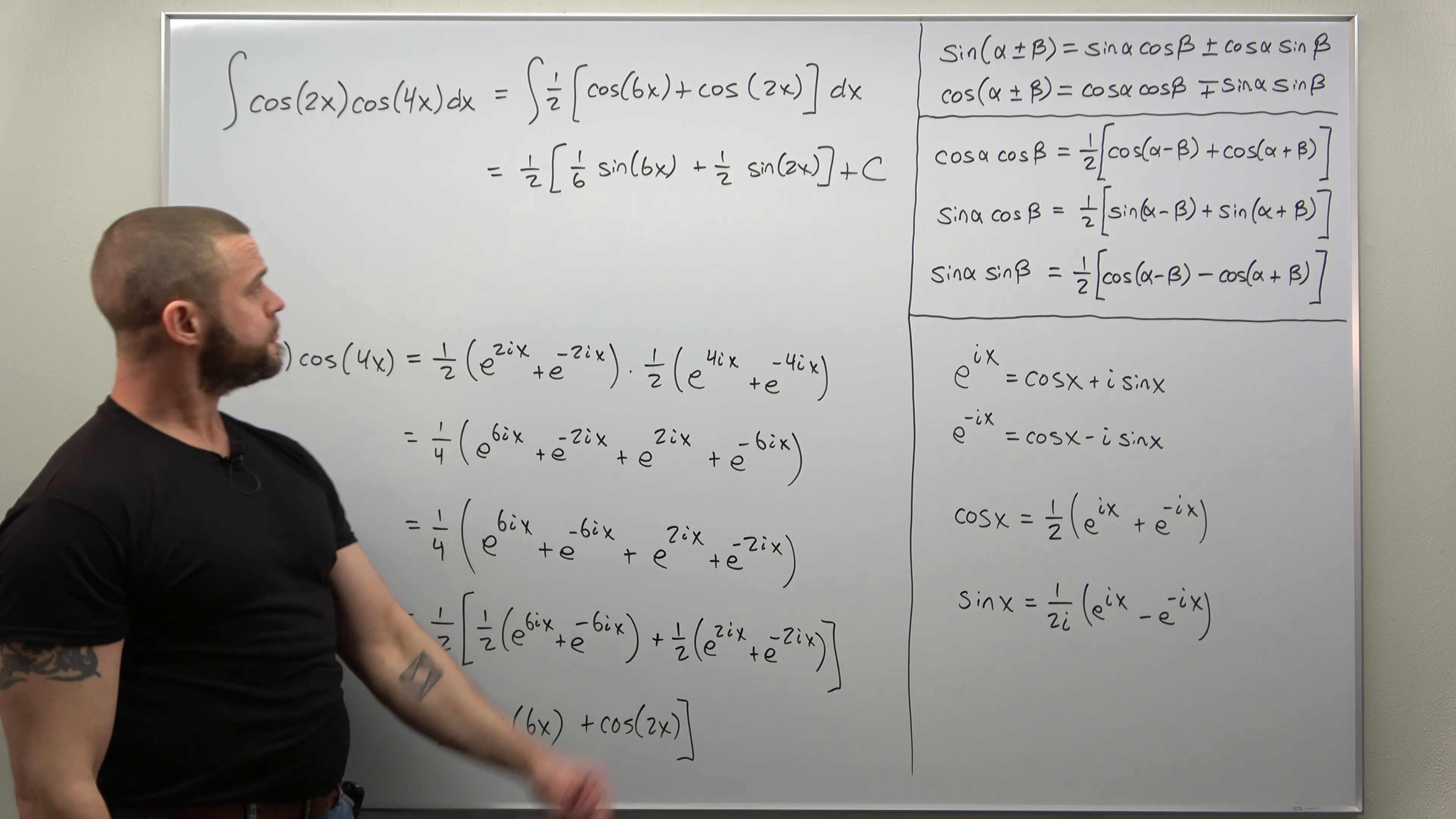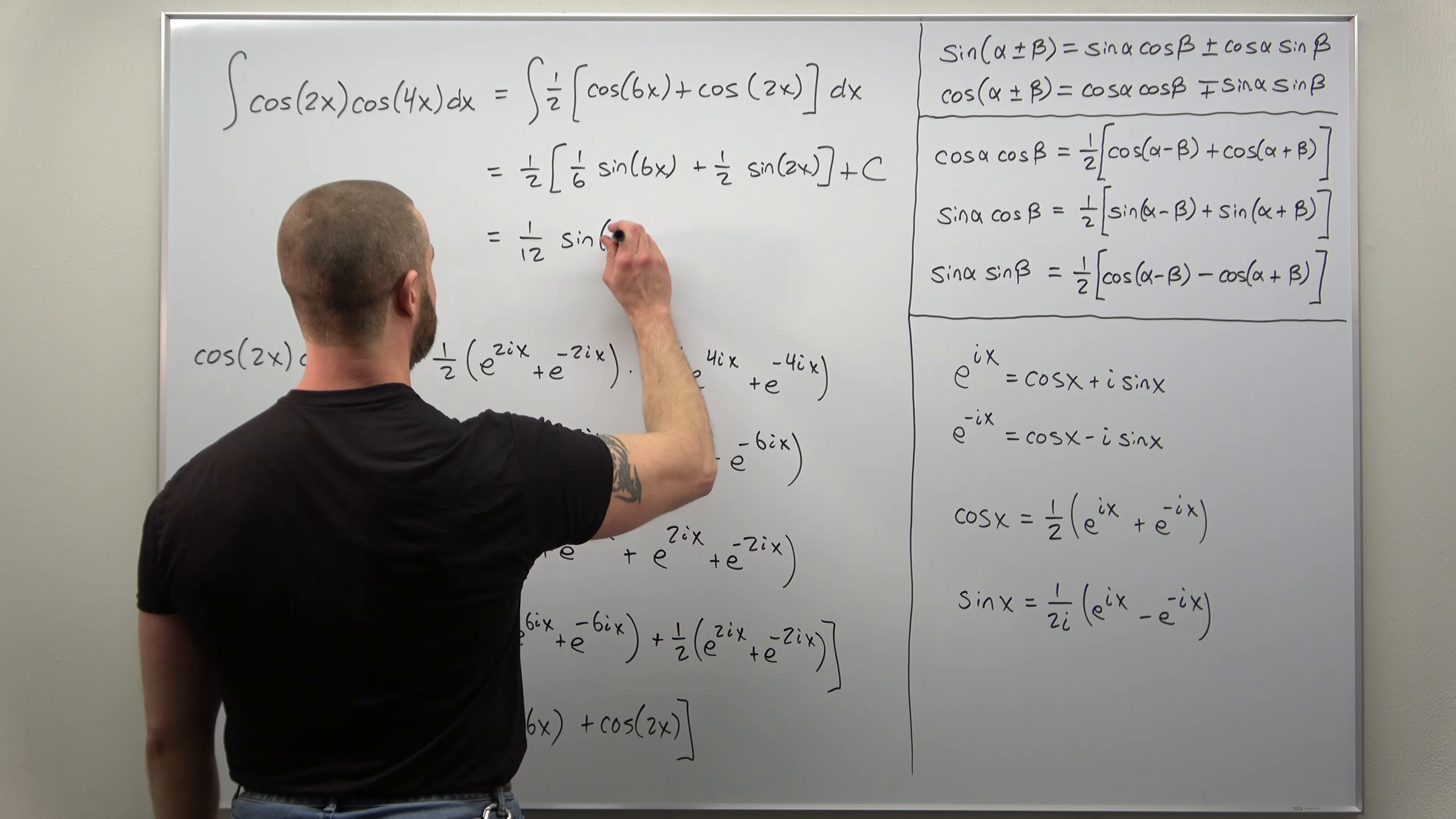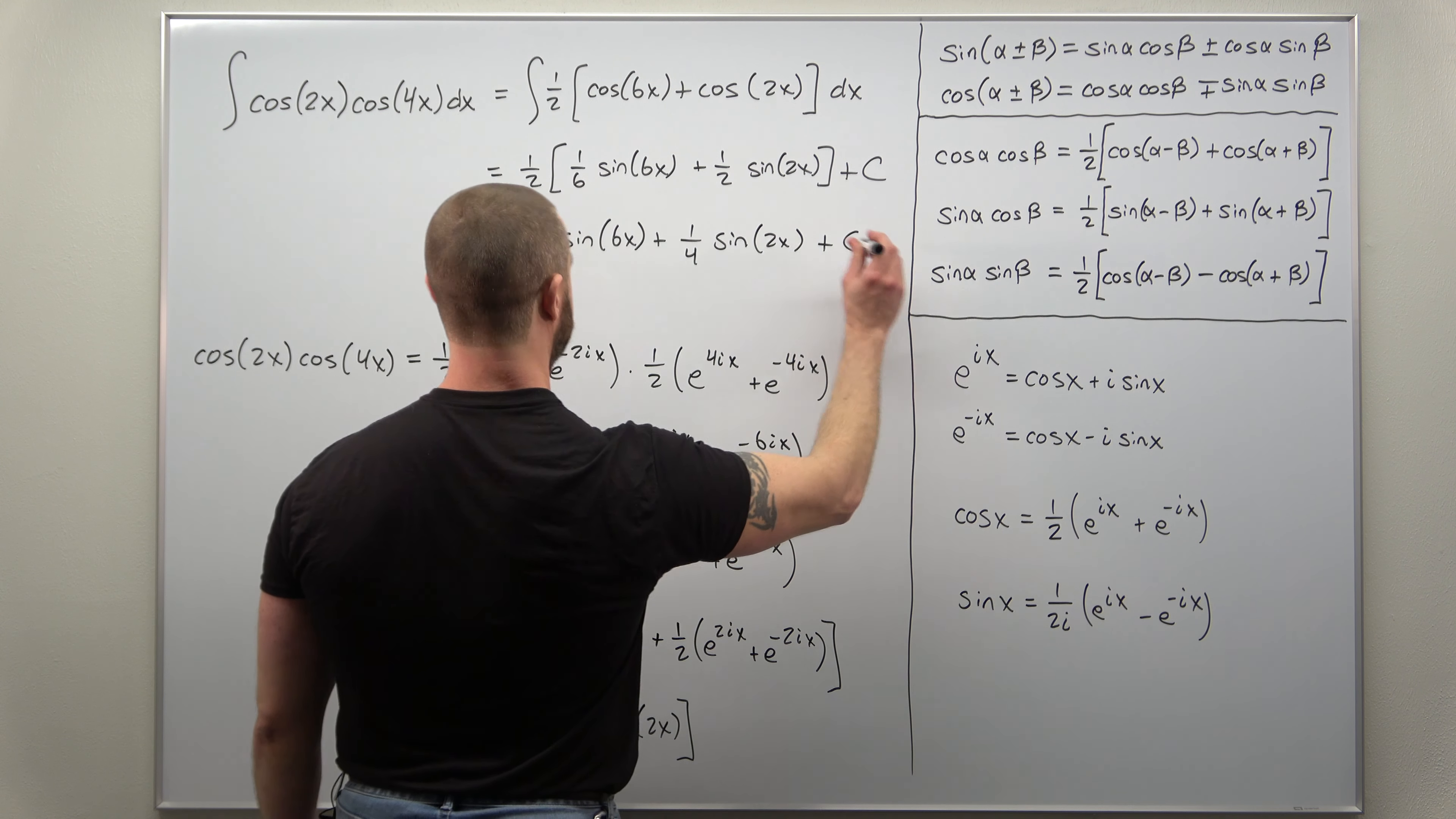You can rewrite this if you want, distribute that one-half, and you can get a final end result: one over twelve sine of 6x plus one over four sine of 2x plus C. That is a really nice alternate method to just brute force memorization of boring identities.